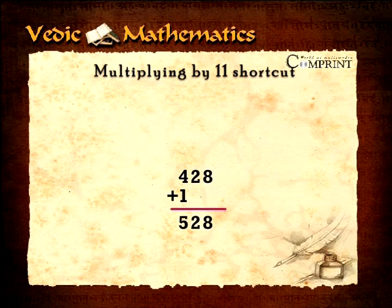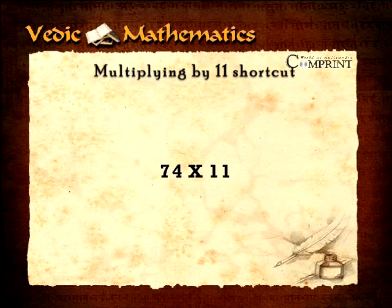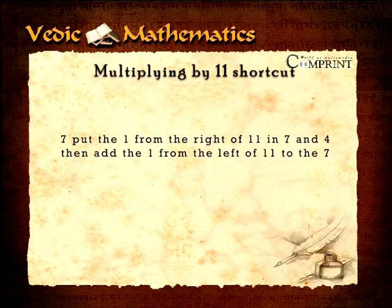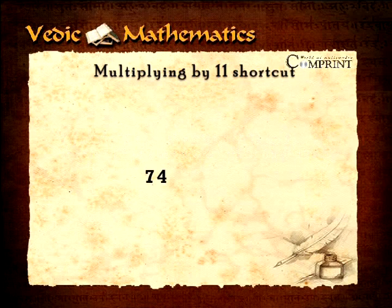Let's do one more: seventy-four multiplied by eleven. Seven plus four equals eleven. Put the one from the right of eleven between seven and four, then add the one from the left of eleven to the seven. Therefore, seventy-four multiplied by eleven equals 814.